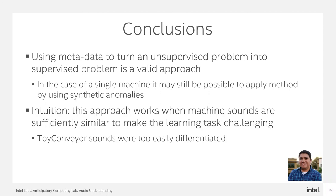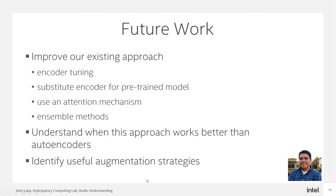For future work, we would like to improve our existing approach. We feel we can tune our encoder better, or maybe even substitute it using a popular model architecture like ResNet. We think an attention mechanism or ensemble methods might help — we may have been one of the only teams that did not include an ensemble in their submission. We would also like to better understand when our approach works better than mainstream approaches like autoencoders, and identify useful augmentation strategies, as many teams had very interesting strategies for data augmentation.